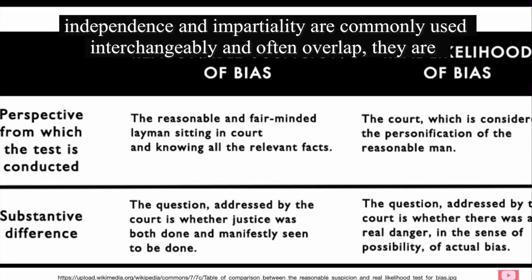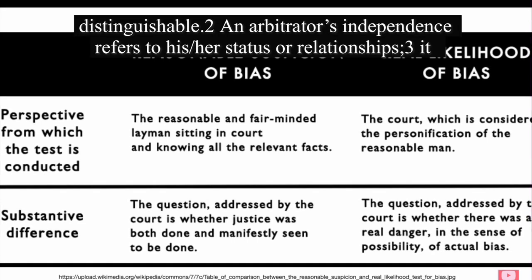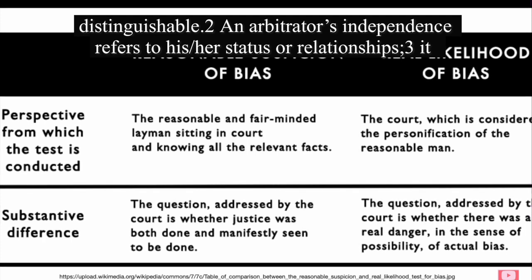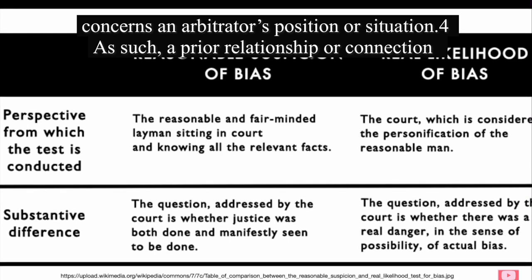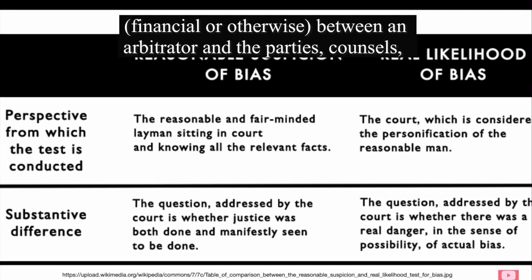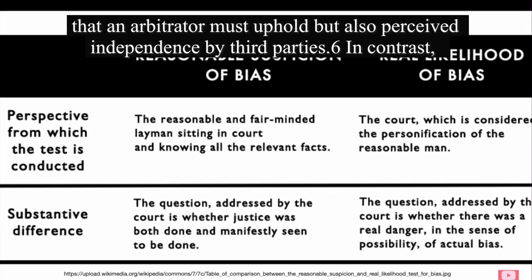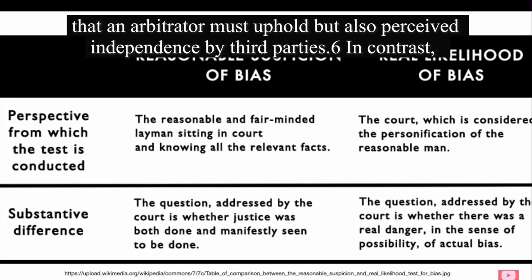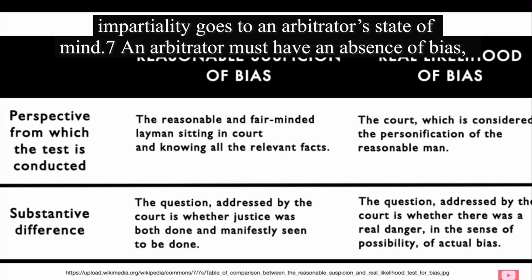Terminology. Whilst the terms independence and impartiality are commonly used interchangeably and often overlap, they are distinguishable. An arbitrator's independence refers to his or her status or relationships; it concerns an arbitrator's position or situation. As such, a prior relationship or connection — financial or otherwise — between an arbitrator and the parties, counsel, and/or co-arbitrators may question an arbitrator's independence. It is not only actual independence that an arbitrator must uphold but also perceived independence by third parties. In contrast, impartiality goes to an arbitrator's state of mind.